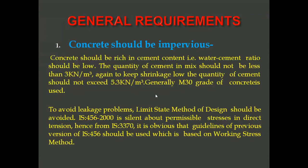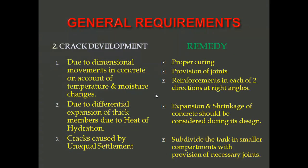The general requirement for rectangular water tank concrete is that it should be rich in cement — the water-cement ratio should be low. The quantity of cement in the mix should not be less than 3 kN per meter cube, and to keep shrinkage low, the quantity of cement should not exceed 5.3 kN per meter cube. Generally M30 grade of concrete is used. To avoid leakage problems, the limit state method of design should be avoided. IS 456-2000 is silent about permissible stress in direct tension, hence IS 3370, which is the special code for hydraulic structures, should be used and it is based on the working stress method.